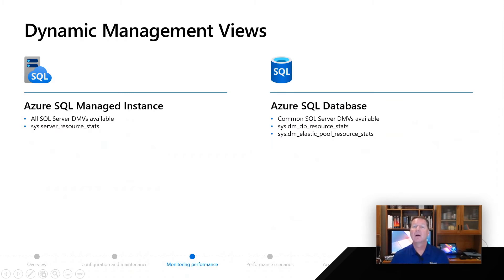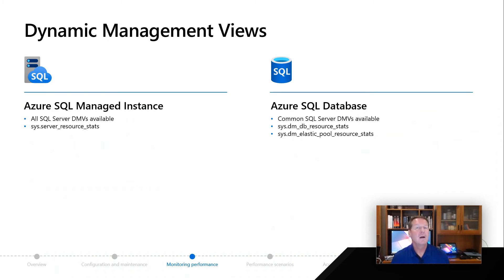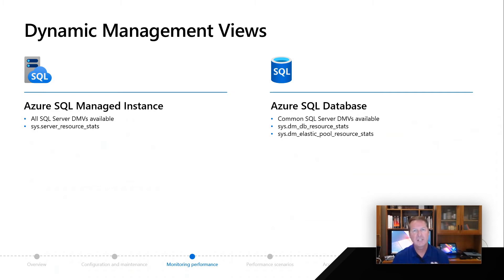For Azure SQL Database, most common SQL Server DMVs are available. In fact, with the V12 architecture, we lit up a lot of SQL surface area DMVs you didn't have access to before. Not everything available in MI is there for Azure SQL Database, but the ones you truly need, you're going to find are there for you. In addition, sys.dm_db_resource_stats and Elastic Pool Resource Stats are also going to give you resource usage capabilities from a polling snapshot point of view, important for monitoring overall resource usage of your Azure SQL Database deployment.